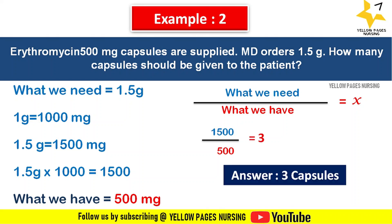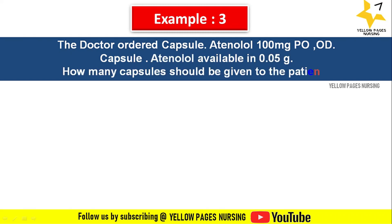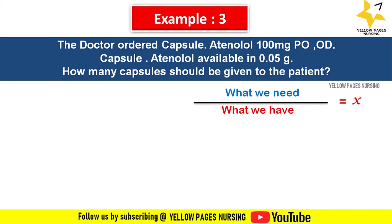Next example: Doctor orders capsule atenolol 100 milligram per oral OD. Atenolol available on hand is 0.05 gram. How many capsules should be given to the patient? The formula will be what we need divided by what we have. What we need is 100 milligrams — that is the doctor's order.